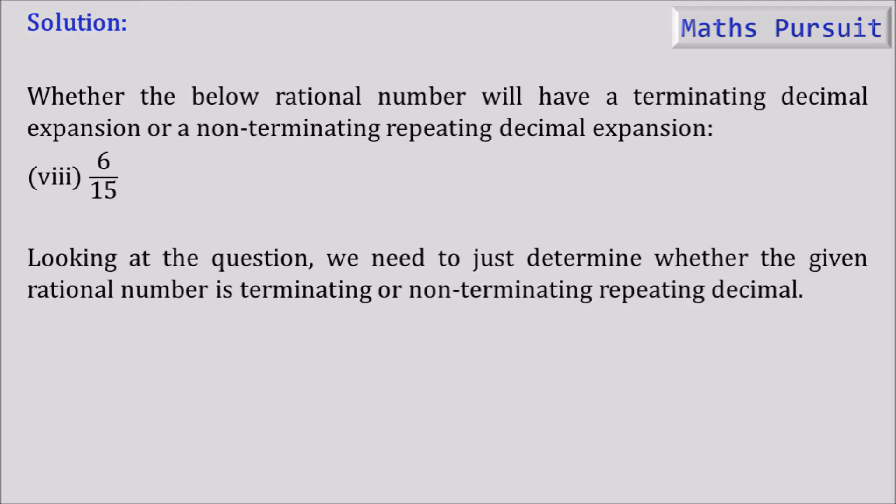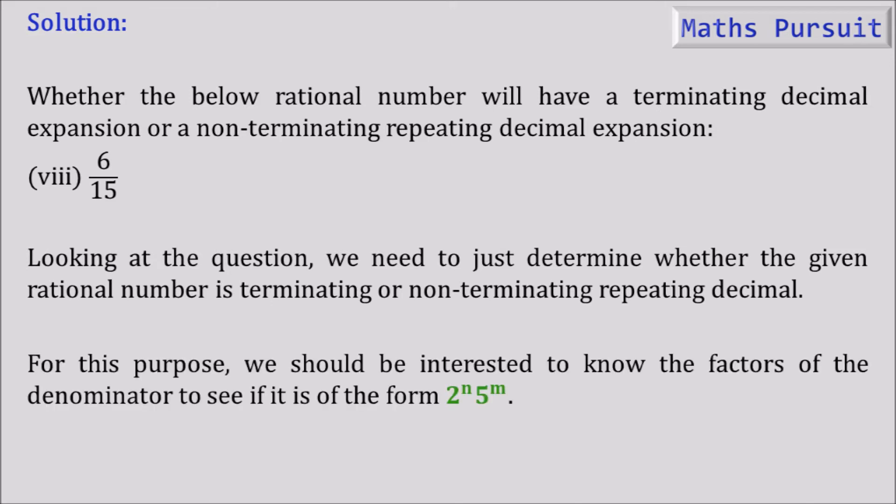Just looking at the question, we need to determine whether the given rational number is terminating or non-terminating repeating decimal. For this purpose, we are interested to know the factors of the denominator to see if it is of the form 2 to the power n and 5 to the power m.